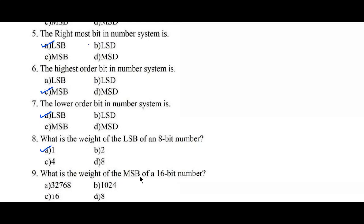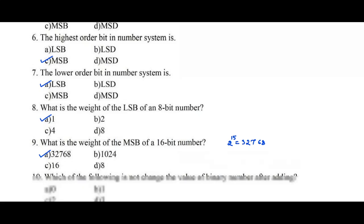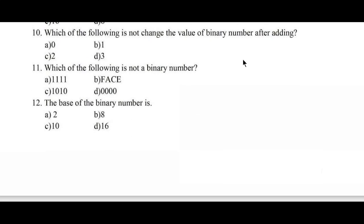Question number nine: what is the weight of the MSB of a 16-bit number? Options: A) 32768, B) 1024, C) 16, D) 8. Option A, 32768, is the right answer because in a 16-bit number, the MSB weight is 2 to the power 15, which equals 32768.